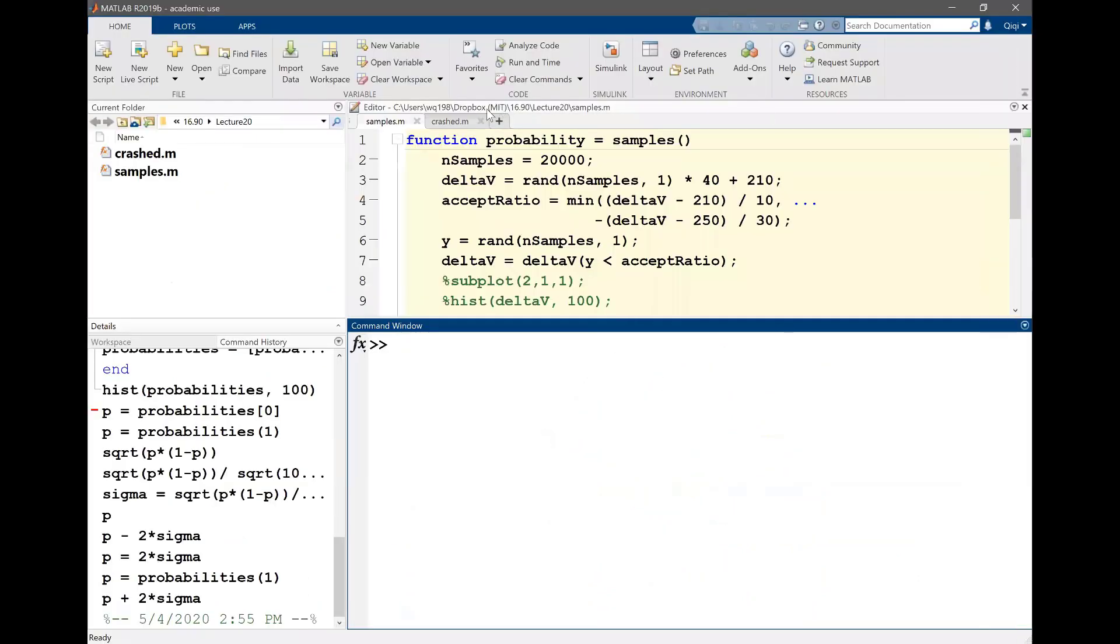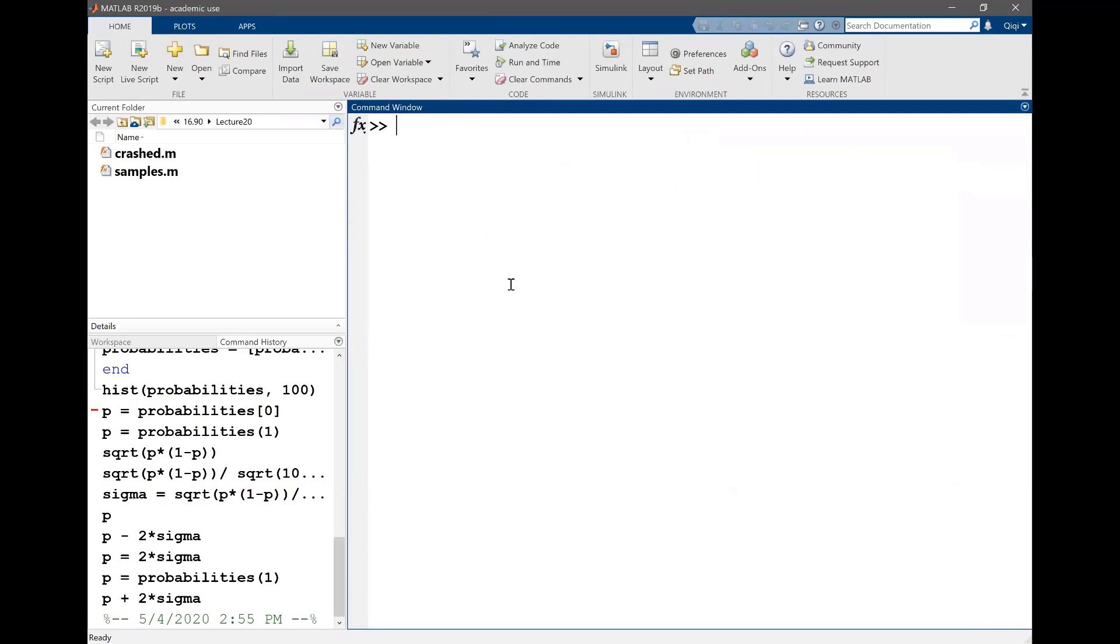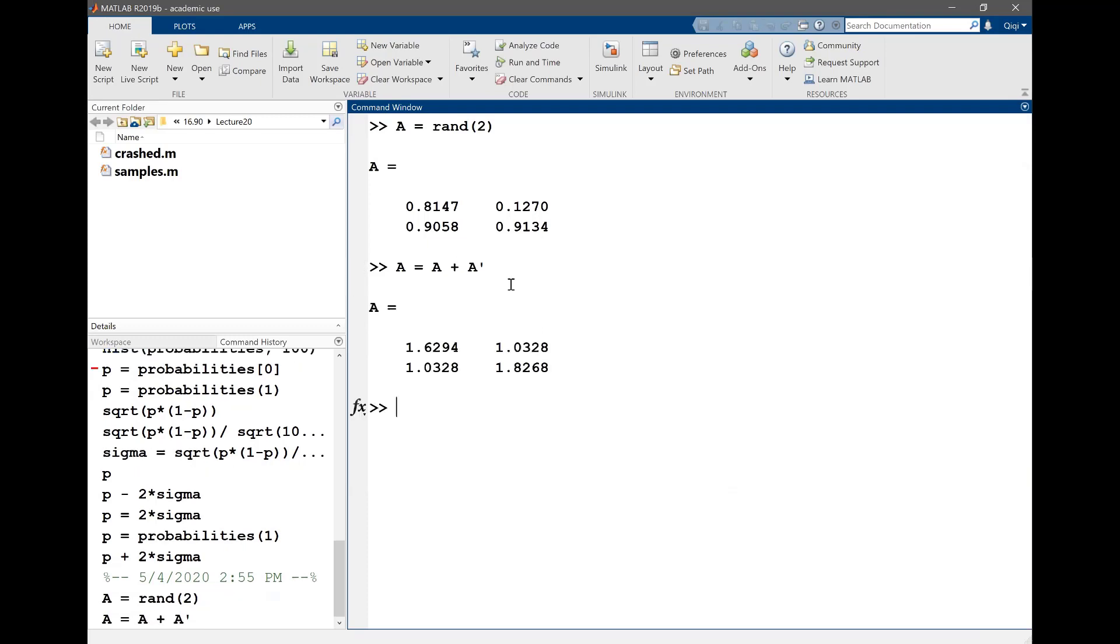Let me just give you a few examples. So let me just take a pretty random matrix A. So rand 2 is going to give me a random 2 by 2 matrix. And let me make it symmetric by A equal to A plus A transpose. That has given me a pretty random symmetric matrix.